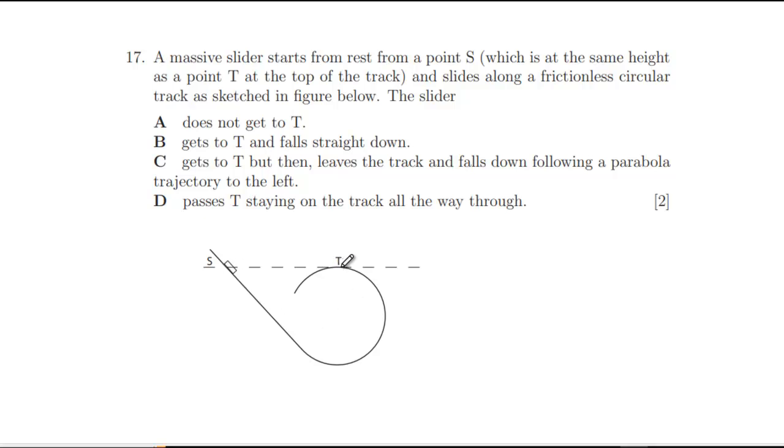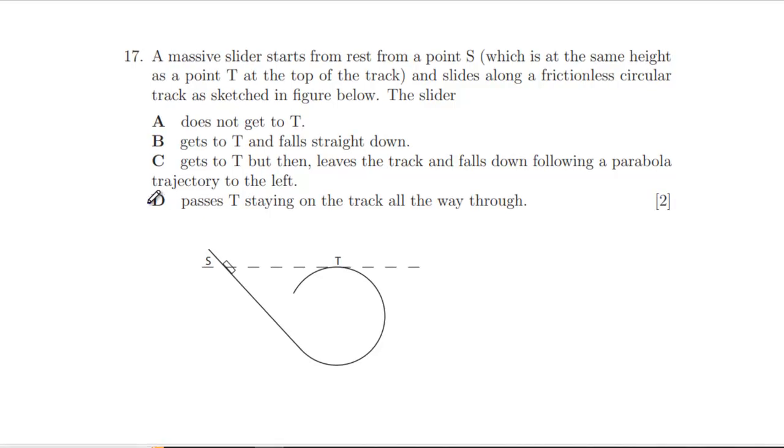We've got two easy ones to rule out. If we've got conservation of energy and S and T are at the same place, if the slider gets back to T then it can't have any kinetic energy. So it can't pass through T staying on the track, it can't get to T and then move off in a trajectory to the left. Getting to T and falling straight down doesn't seem likely. Let's think about what's happening with forces.